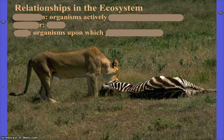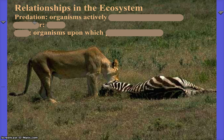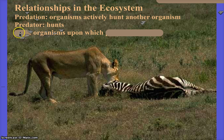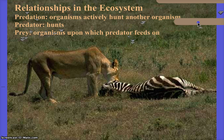So the first example of symbiosis is predation. What do we know about predation? The predator actively hunts another organism to benefit itself. So the predator benefits from this relationship, and the prey gets eaten and dies — not a benefit at all.